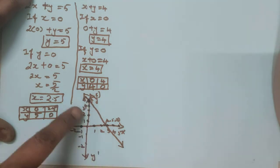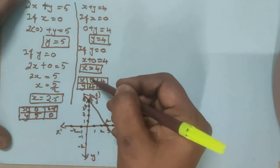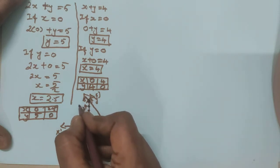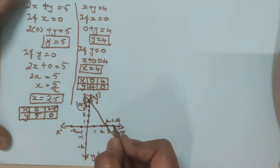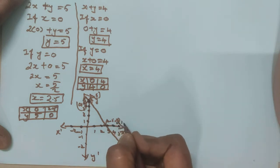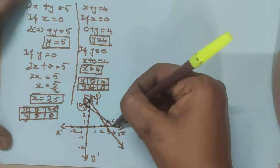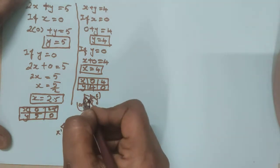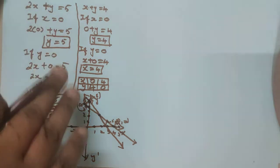Now take the second equation. If x is equal to 0, y is equal to 4. x is 0 means here on the y-axis, y is 4 — so plot (0, 4). Next, (4, 0) will come here. So join these two points. They will intersect at one point — that is the solution for this equation. I have drawn roughly; please draw on a graph sheet and check.